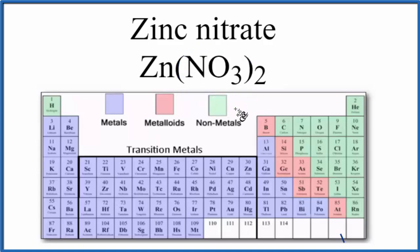So if we look at zinc on the periodic table, it's right here. That's a metal. And then the nitrogen and oxygen, here's nitrogen, here's oxygen, those are nonmetals. When we have a metal and nonmetals, we have an ionic compound.